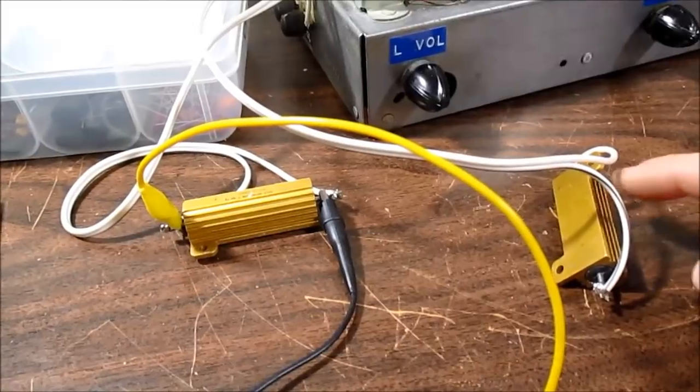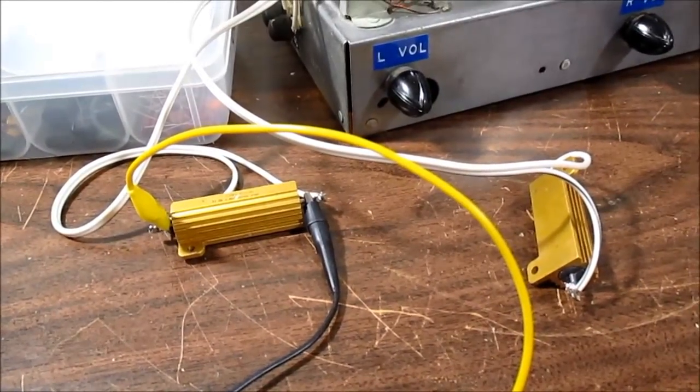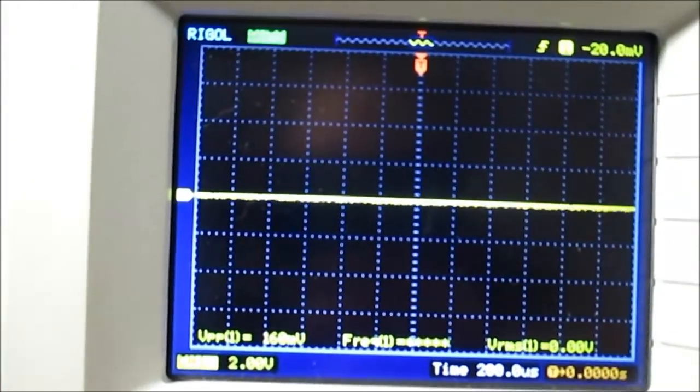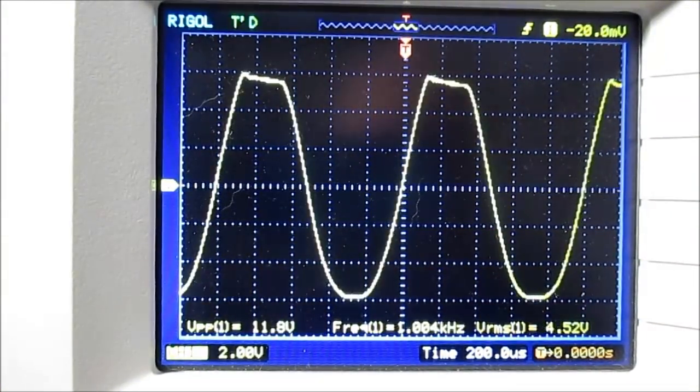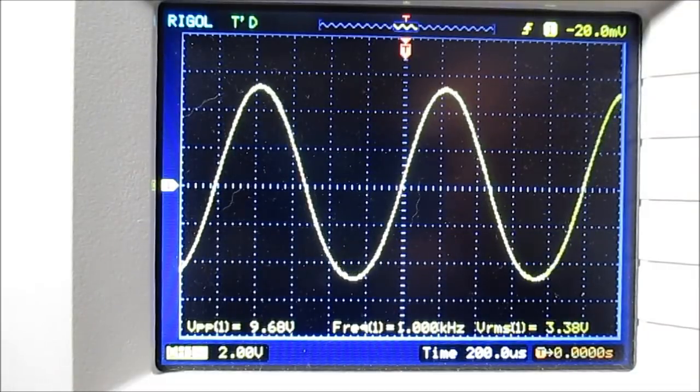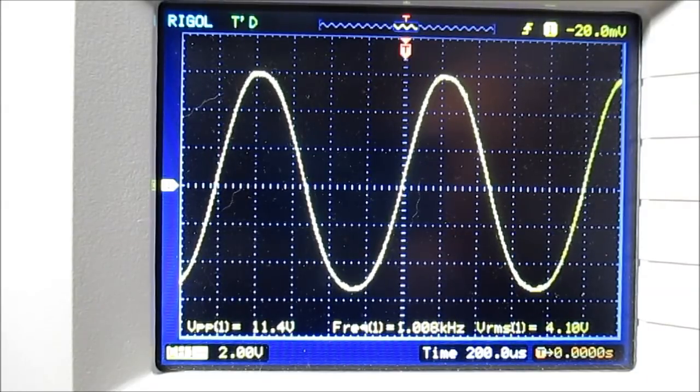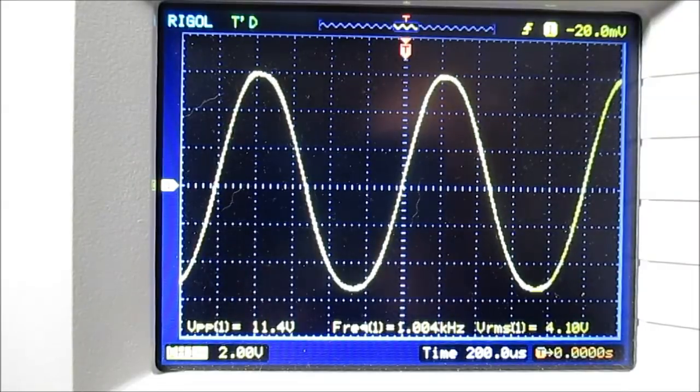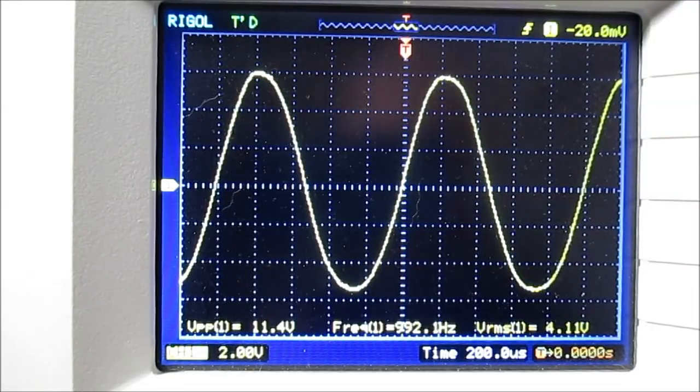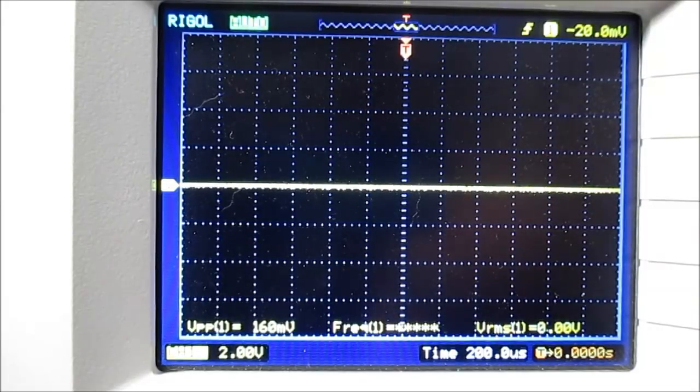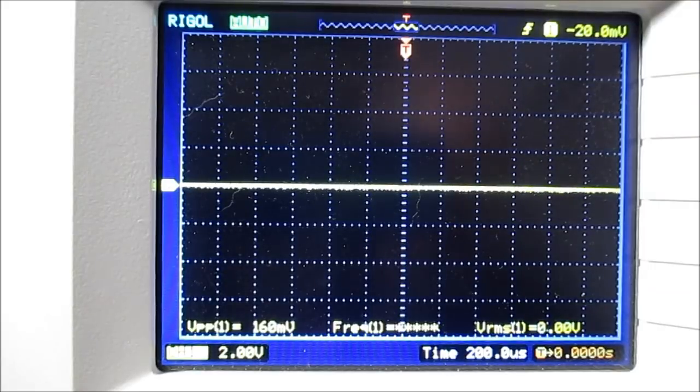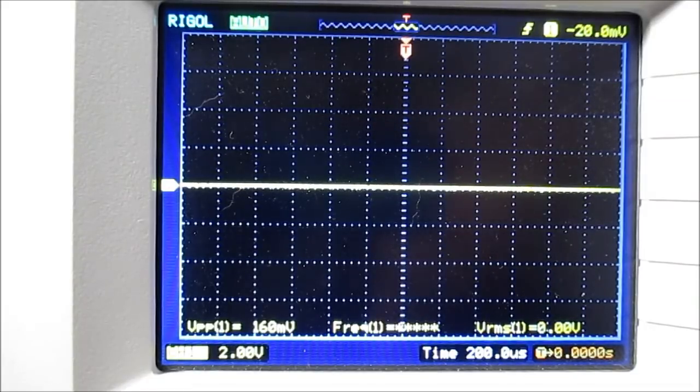I have the 8 ohm loads connected, both channels driven. Maximum clean power before clipping. One kilohertz signal. We will find the maximum point just before clipping, and say right around there. 4.1 volts. So we are putting out 2.1 watts per channel. Yeah, I guess with the lower current, about what I would have expected.